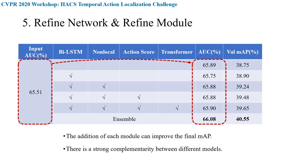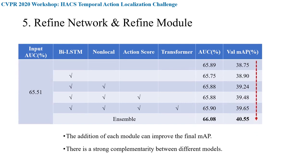We also see that the addition of each module can effectively improve the final mAP, showing that the fusion of temporal information is very helpful. Our final result achieves a mAP of 40.55% on the validation set and 40.53% on the test set.